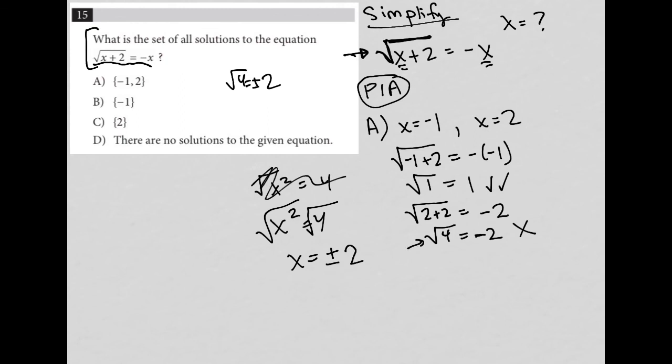But when the square root is already provided, as we have, the negative option is not considered correct on this test. For that reason, x equaling 2 cannot work. That means A is gone and C is gone. D says there are no solutions to the given equation. We know that's not true because x equaling negative 1 is a solution. So choice B is correct.